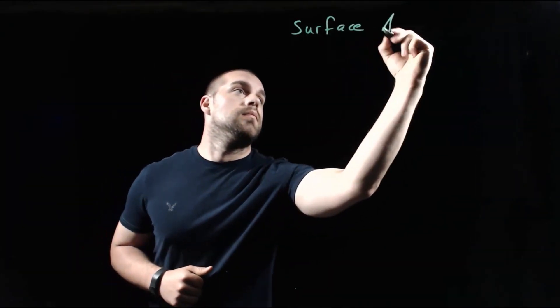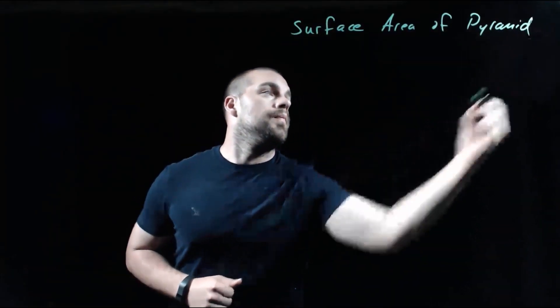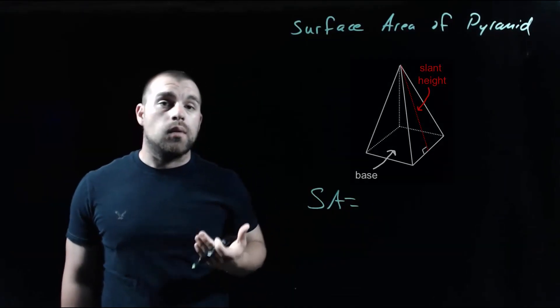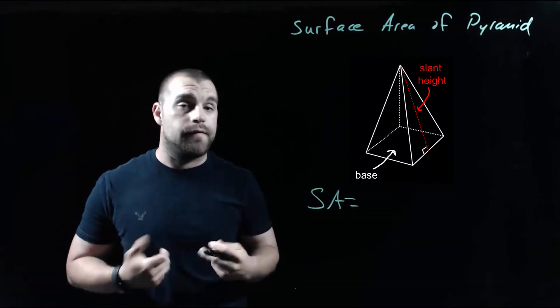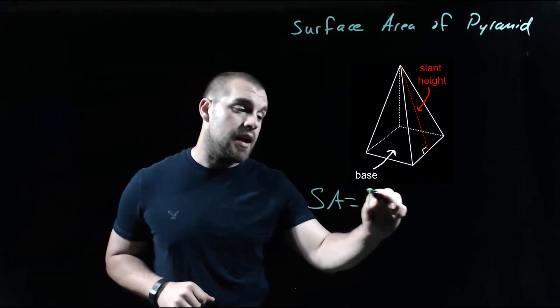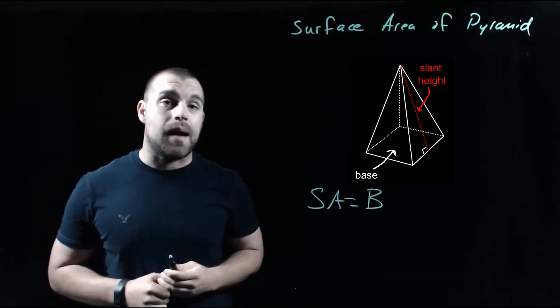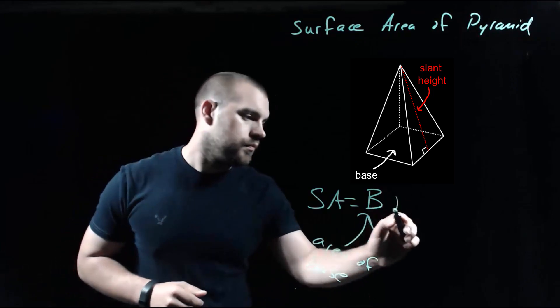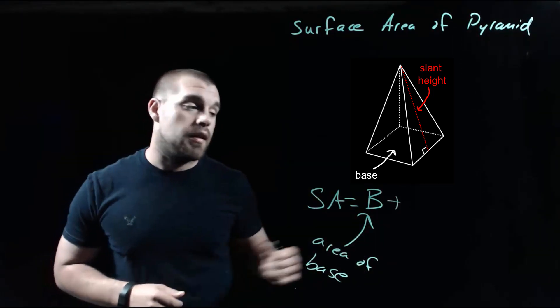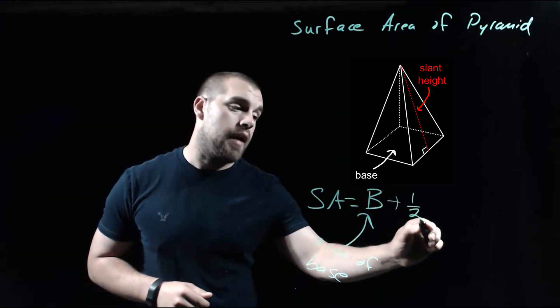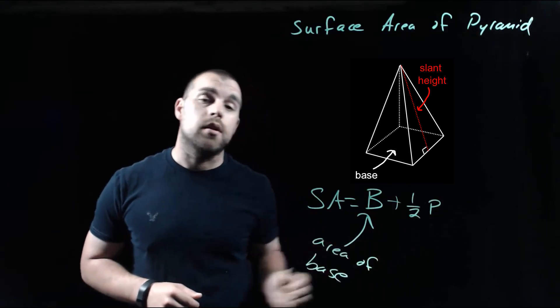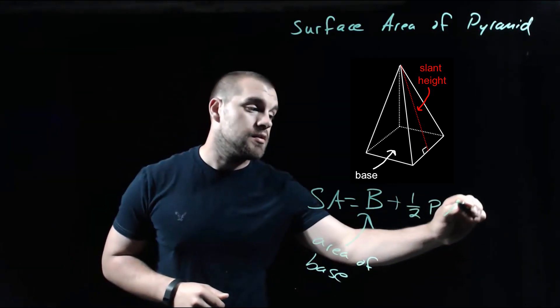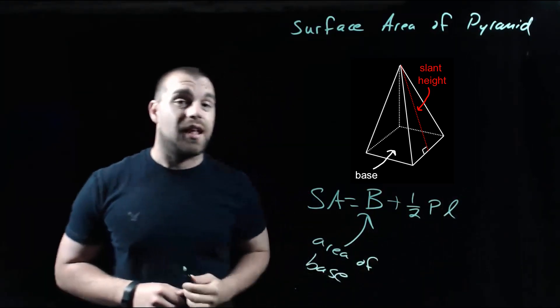So as we're looking at finding the surface area of our pyramid, a lot like we did with prisms and cylinders, the first thing we're going to find is the area of the base — that capital B value. But we're going to add some extra stuff onto the end of that: one half times the perimeter of the base times the slant height.